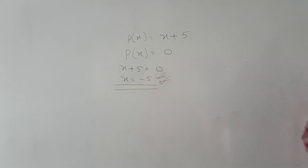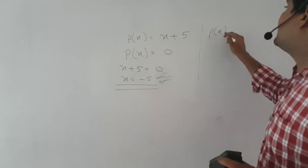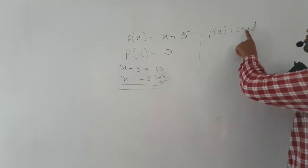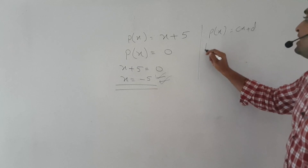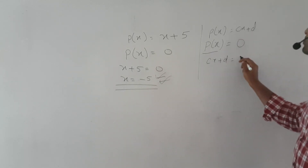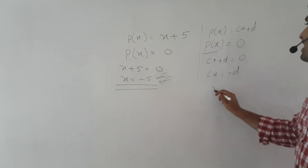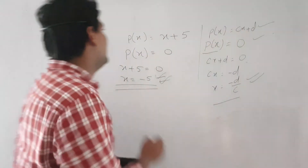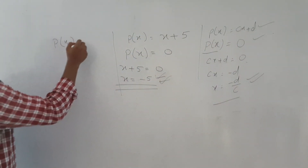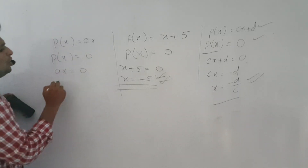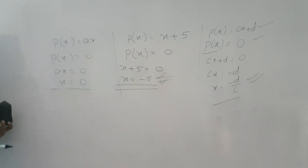The seventh part: p(x) equals cx plus d. Same procedure — set p(x) equal to 0. So cx plus d equals 0, which gives cx equals minus d, and x equals minus d upon c. That is the zero of polynomial. Another question: p(x) equals ax. Set p(x) equal to 0: ax equals 0, so x value is 0. The zero of this polynomial is x equal to 0.